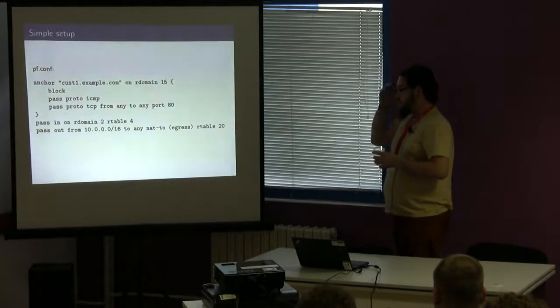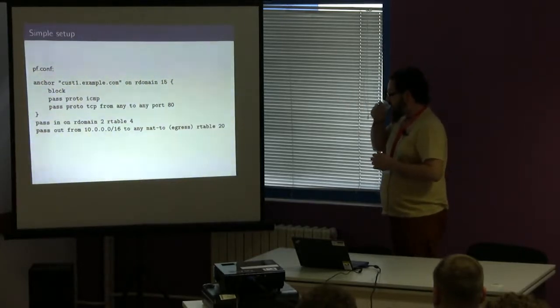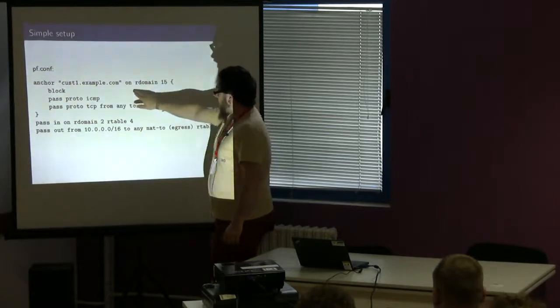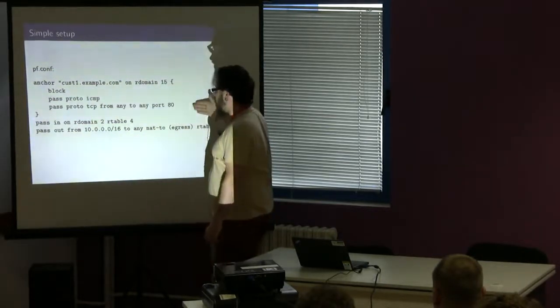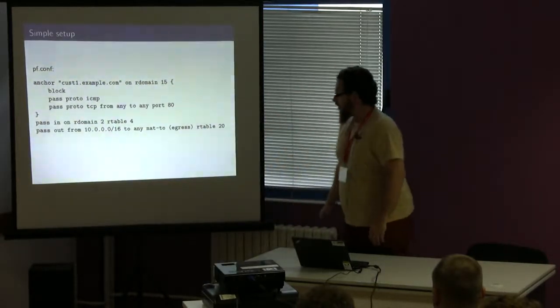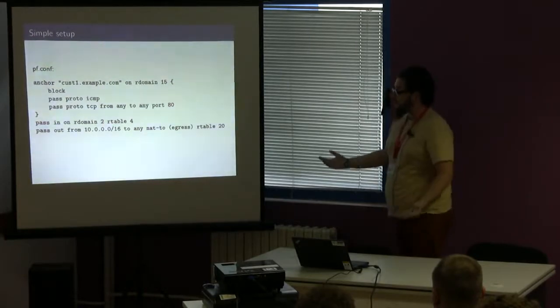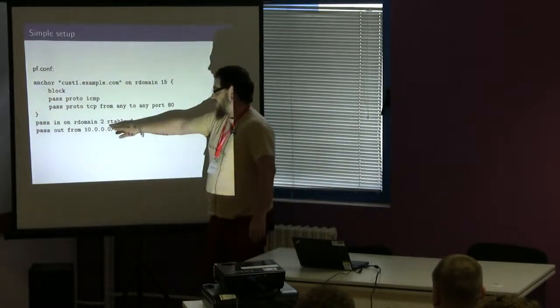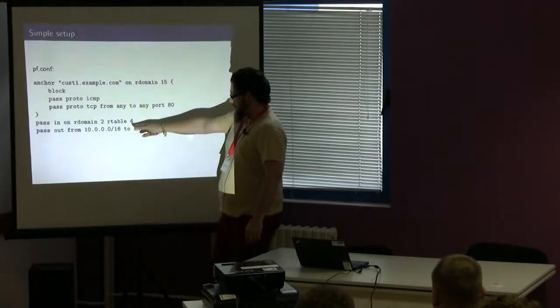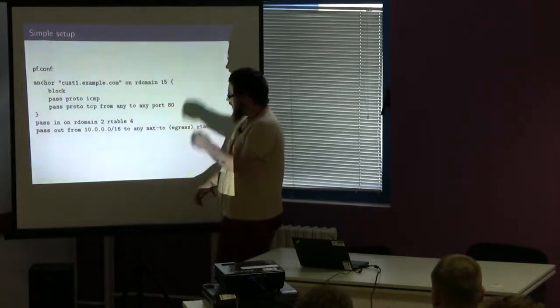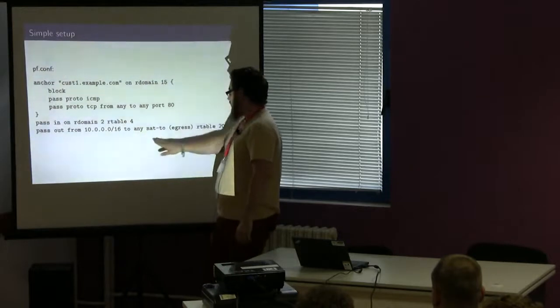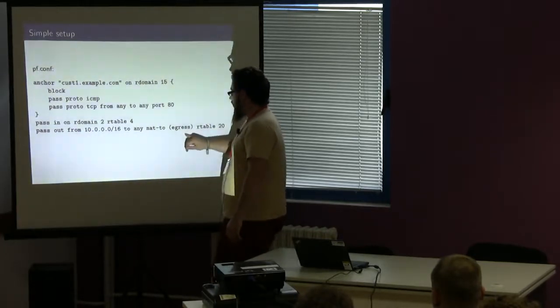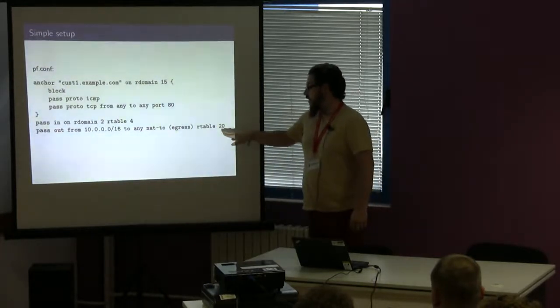Here's an example from PF to make decisions and things with routing domains. This anchor block here is any packet that arrives on routing domain number 15 will have this rule set applied. It's a fairly simple rule set: default to block, allow ICMP, and we have a web server there apparently. This line here will pass in traffic that arrives on routing domain number two, and it'll retag it and send it out on routing domain number four. This line here allows us to do a NAT. So any traffic coming from 10.0 slash 16 going outside of the network will be NAT to the egress interface and will be put out on R-table 20.